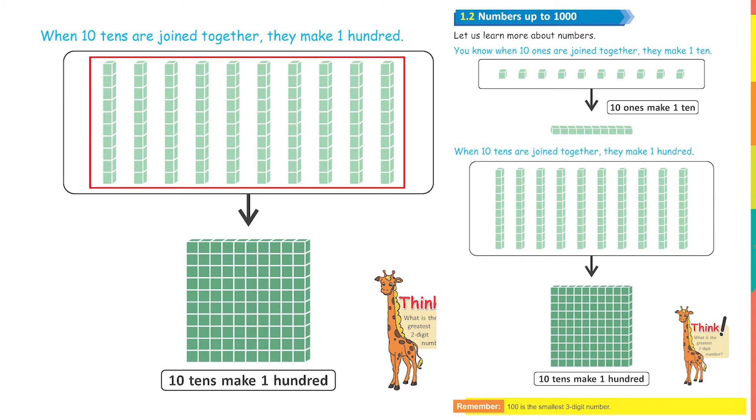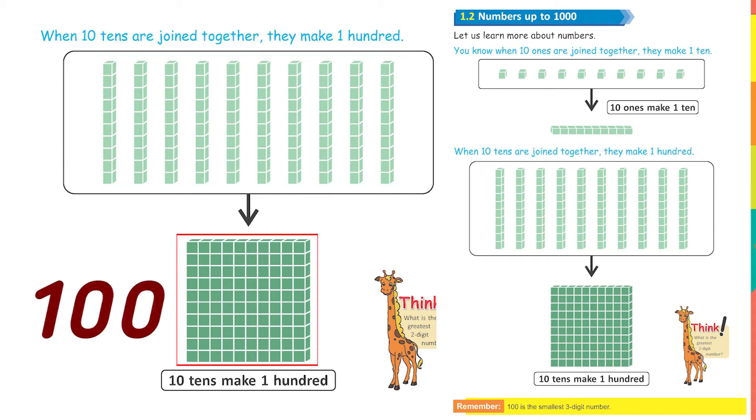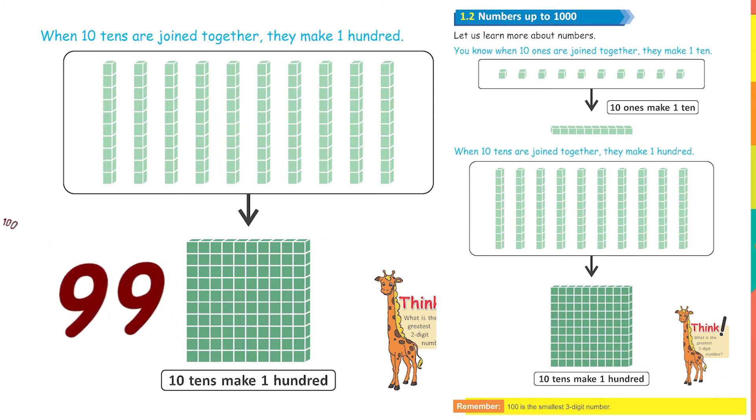If we put together these 10 bars that makes 100. What is the greatest 2 digit number? Can you tell me what is the greatest 2 digit number? Yes, exactly. 99 is the greatest 2 digit number. And after 99, when we write 100, how many digits are there in 100? Let's start counting. 1, 2, 3. So 99 is the largest 2 digit number. And 100 is the smallest 3 digit number.